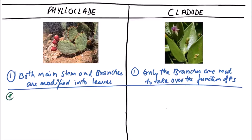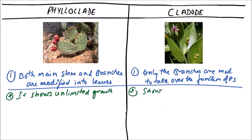The next difference is that a phylloclade shows unlimited growth, while a cladode shows limited growth.